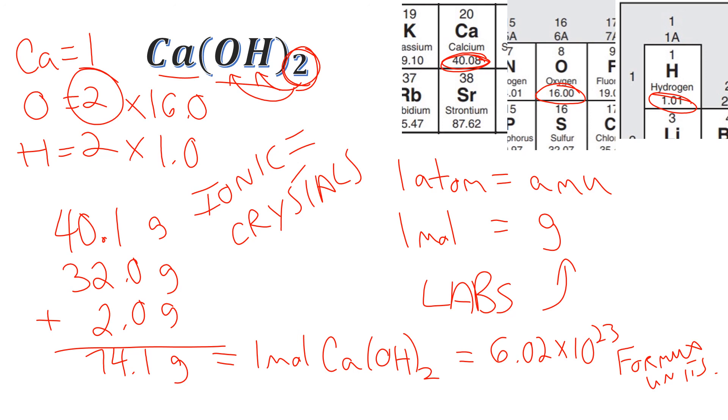So the smallest piece of that crystal structure is known as a formula unit. For covalent molecules, remember, that's all non-metals. Their smallest unit is the molecule. Remember the Latin, molescula, which means a little lump. So covalent molecules, ionic, it's a formula unit. So there would be 6.02 times 10 to the 23rd Ca(OH)2s in 74.1 grams.